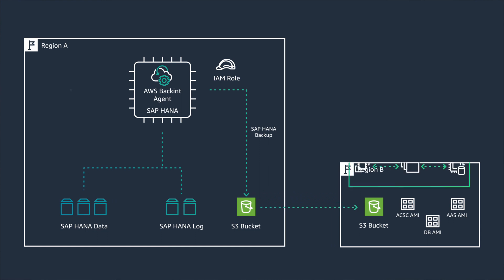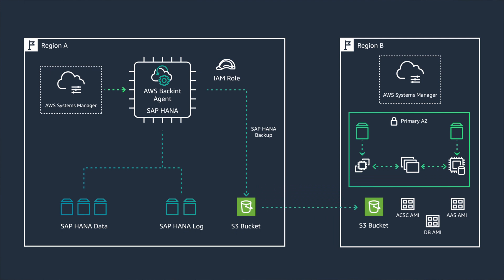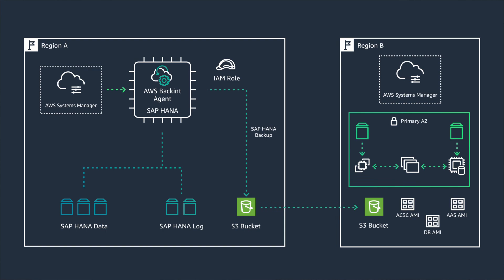And the best part is you can automate much of this process using AWS Systems Manager. You can take the AMIs and ship them to a secondary region, as well as automate bringing up your DR instances. Systems Manager can even begin your backup restore procedures. It gives you the peace of mind that you can recover your systems in case of a disaster.